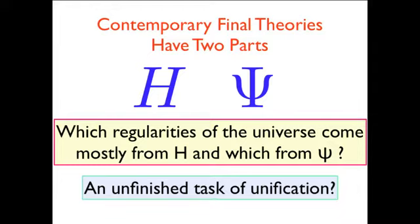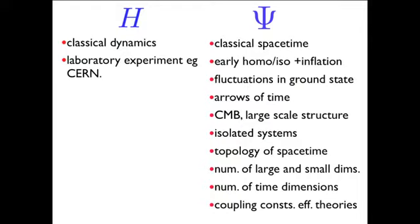So here's a list, a short list of properties. The Hamiltonian dynamical physics is local, for the most part, at least on scales that we operate on. And so the Hamiltonian mostly explains regularities in time. The state, on the other hand, explains mostly regularities in space.